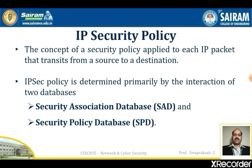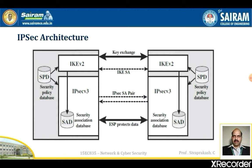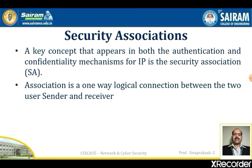This section provides an overview of these two databases and then summarizes their use during IP security operations. The figure illustrates the architecture of IP security, linking the security policy database and the security association database with the two protocols: Internet Key Exchange protocol version 2 and IPSec version 3, showing the source and destination connection with the policy database and association database.